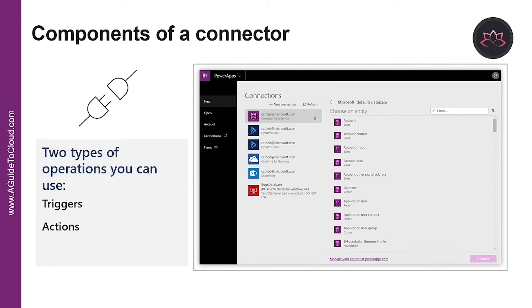Now that you understand data sources, you are ready to learn about connectors. Connectors are the bridges from your data source to your app, workflow, or dashboard. The Power Platform has more than 275 connectors available to common data sources. Connectors are divided into standard and premium. Popular standard connectors include SharePoint, Outlook, and YouTube. Premium connectors such as SQL Server, SurveyMonkey, and MailChimp require additional licensing. You also have the option to build a custom connector to call a publicly available API or a custom API hosted in a cloud provider such as Azure.